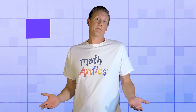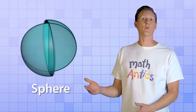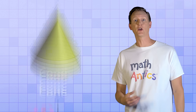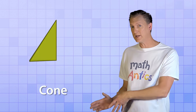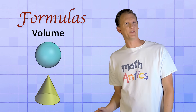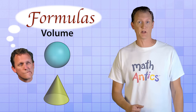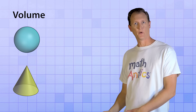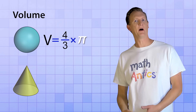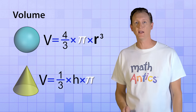Not all 3D shapes are made by extending a 2D shape along a third dimension. Some are made by rotating a shape around an axis — like a sphere, which can be formed by rotating a 2D circle around one of its diameter lines. A cone can be formed by rotating a right triangle around one of its two perpendicular edges. Since the formulas for finding the volumes of spheres and cones are more complicated, for now it's best to memorize them. The volume of a sphere is four thirds times pi times radius cubed. The volume of a cone is one third times height times pi times radius squared.